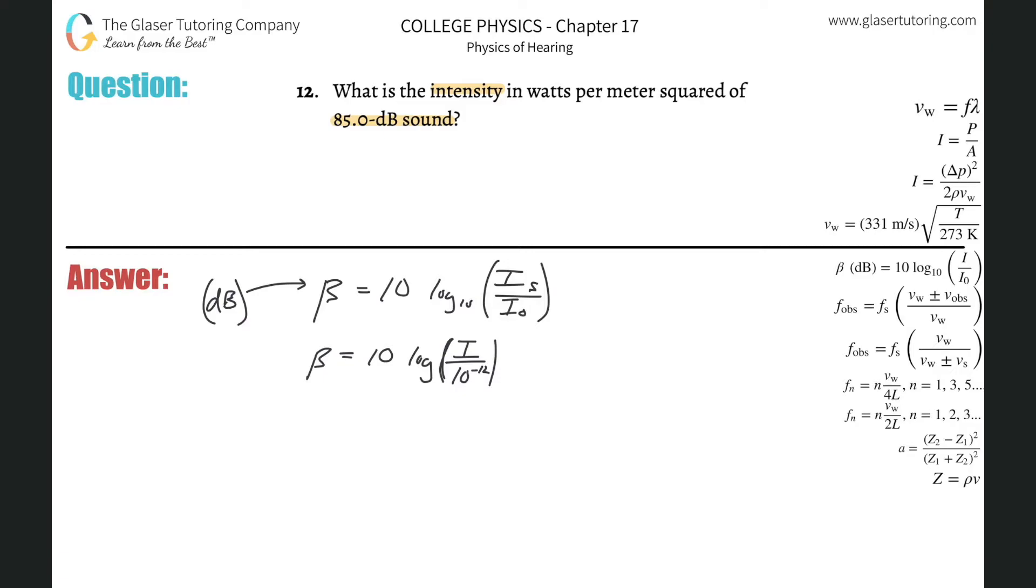So now all I need to do basically is solve this for the intensity I. How do we do that? Well, first thing is let me plug in my beta value. My beta value is going to be 85, and I can already see that if I put a little bracket here, then I can divide out the 10 from that side. So this is 85 over 10.